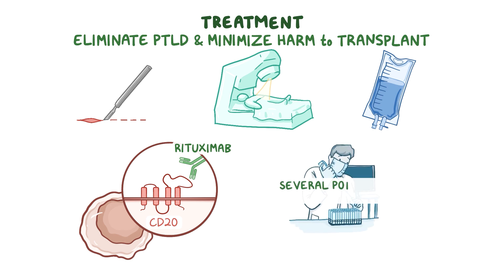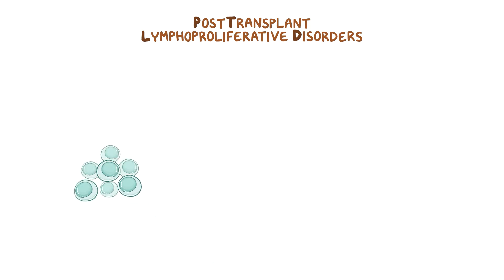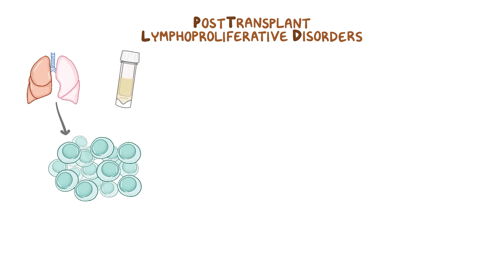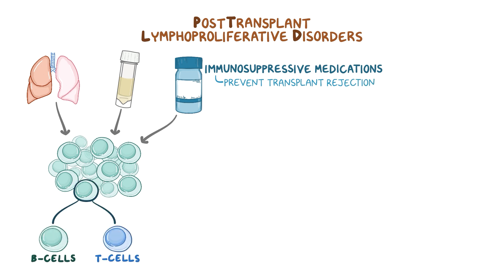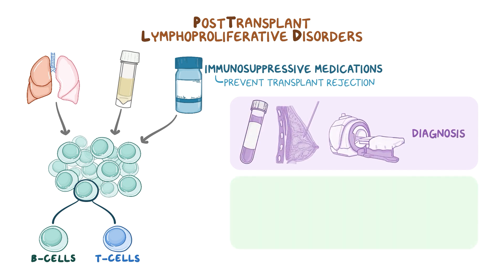There are several potential therapies for these conditions that are currently in the investigational stages of development. As a quick recap, post-transplant lymphoproliferative disorders, or PTLDs, are uncontrolled growths of lymphocytes that occur after someone has received a solid organ or stem cell transplant that requires immunosuppressive medications to prevent transplant rejection. They can originate in either type of lymphocyte, B-cells or T-cells. Diagnosis involves blood tests, a biopsy, and imaging, while treatment may include surgery, chemotherapy, and radiation.